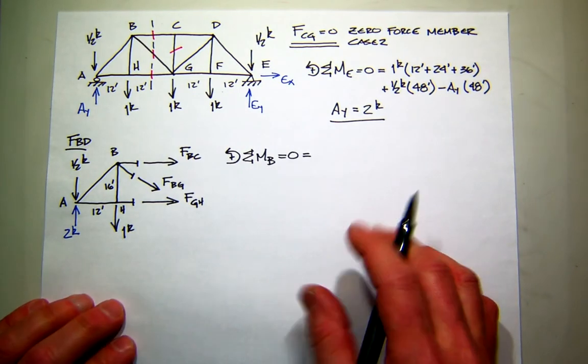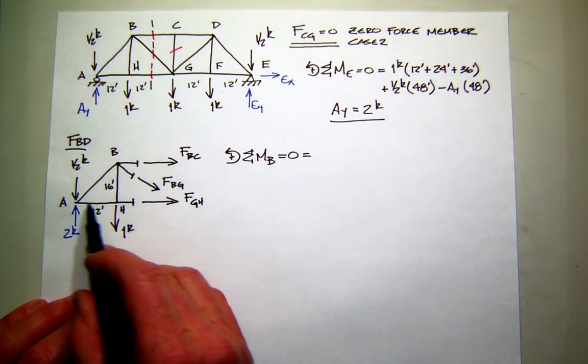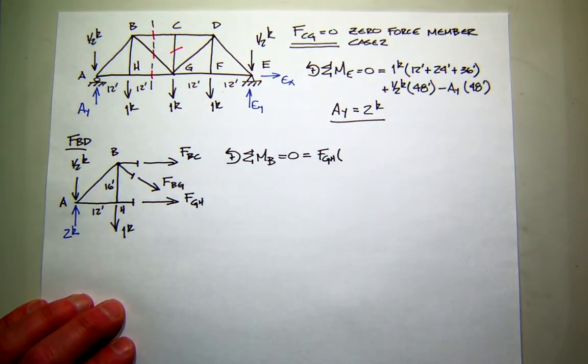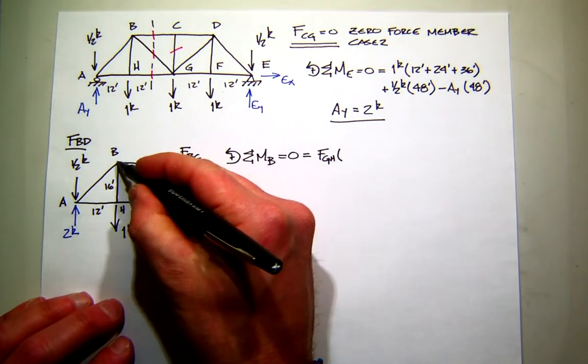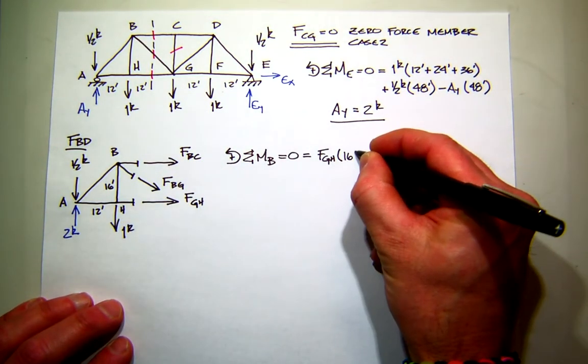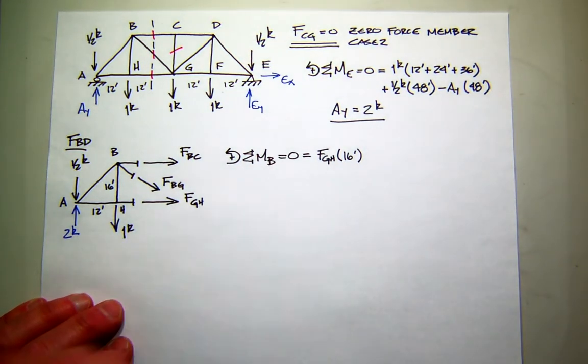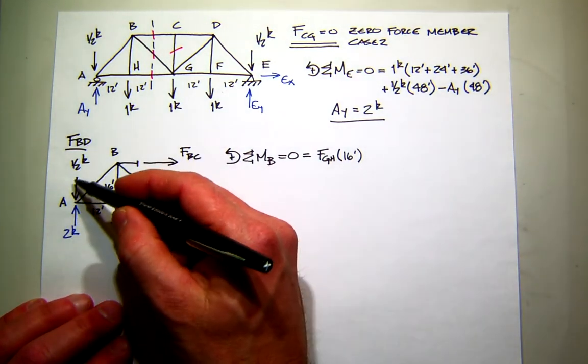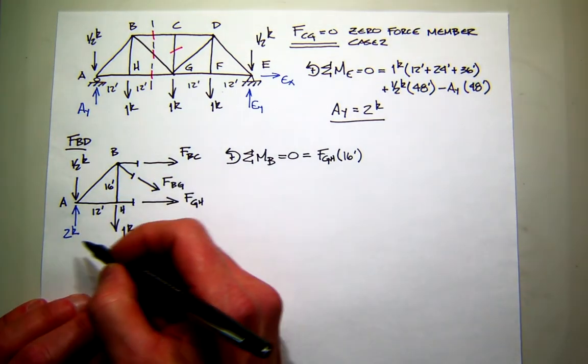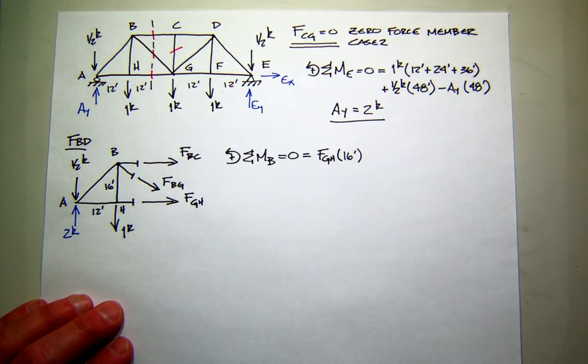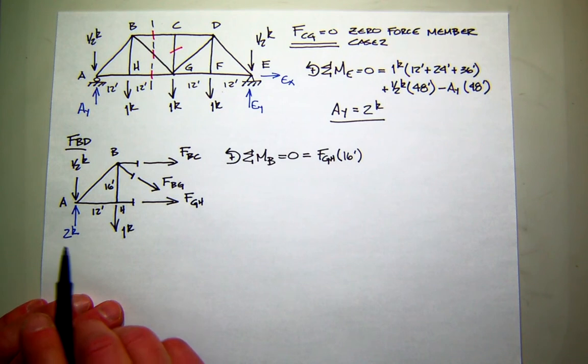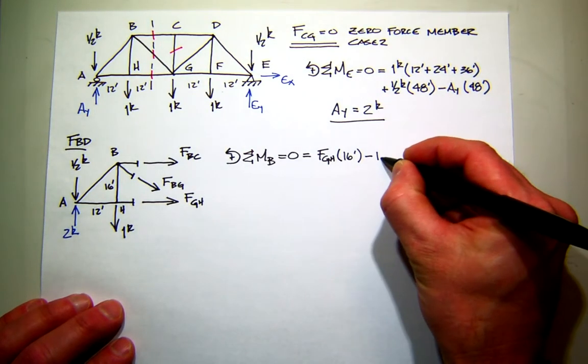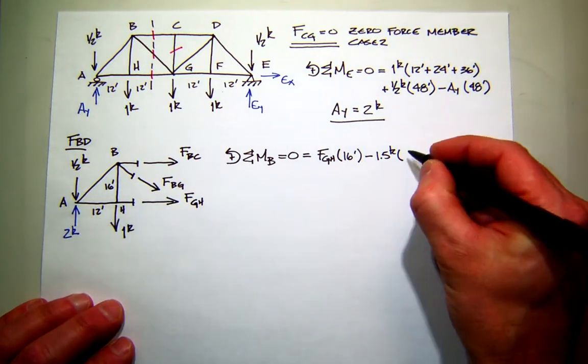So who creates moment about B? Well, BC and BG do not. GH creates positive moment. Everybody see that? And what's the moment arm? Well, we're doing GH, right? And from B, the perpendicular distance would be the height, which is 16. What about this one-kip force? Does it create moment about B? No, its line of action passes through B, right? And then I have these two forces over here, the applied force, one-half, and the two-kip force acting up. So really, what's the resultant of those two forces? One-and-a-half acting up. So let's just treat it as that. So a one-and-a-half kip force acting up would create positive or negative moment about B? Negative.